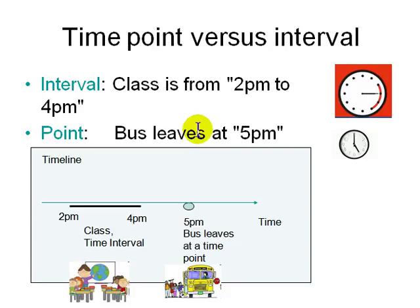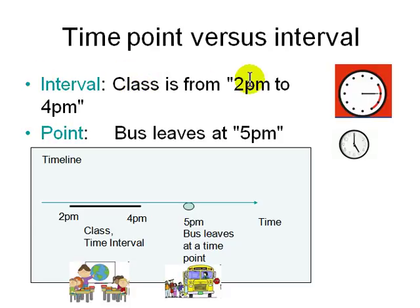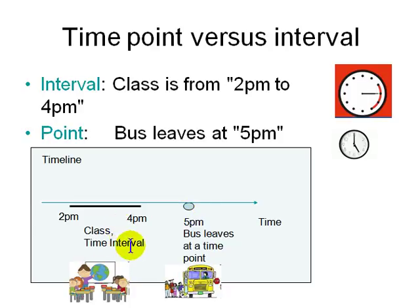There are two kinds of time logic: interval logic and point logic. A point means you have a specific instant — if you say '1 o'clock' or '2 p.m.', that's a point. An interval is a range, like from 2 p.m. to 4 p.m. A point would be: 'the bus leaves at 5 p.m.' So you have logic involving time intervals and logic involving time points.